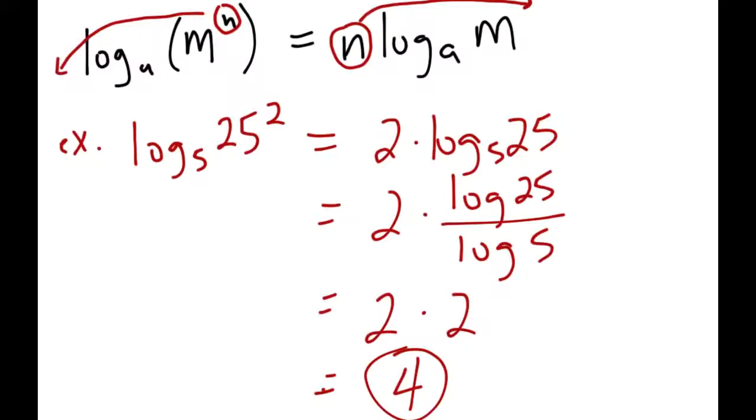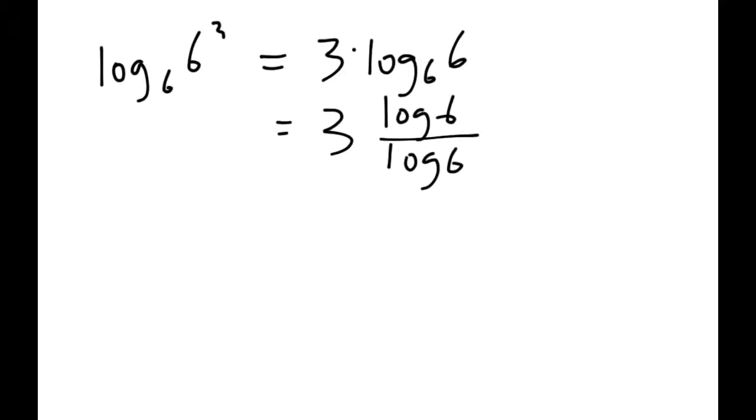Before we quit for today, I want to show you one other practical application of this one. If I gave you log base 6 of 6³, using this new formula we know that's the exact same thing as 3 times log base 6 of 6. And from yesterday, we know that log base 6 of 6 can be written as log 6 divided by log 6. But because you have log 6, they're both the same, those actually cancel out and you just get a 1. So this formula comes in handy because if you can ever change it so that the log number and the base number are the same, then your answer will basically just be whatever that exponent is, because you can bring that exponent down in front and it'll just be like 3 times 1 like it is in this case.